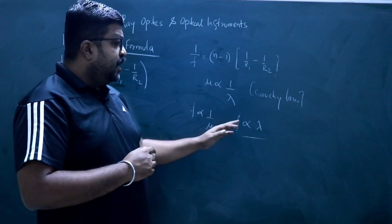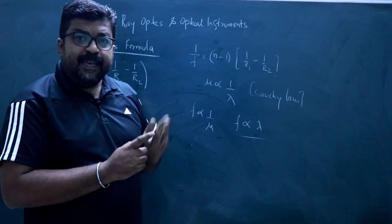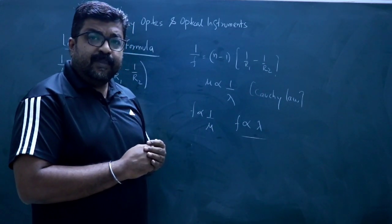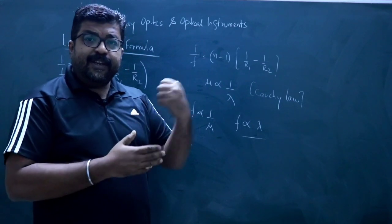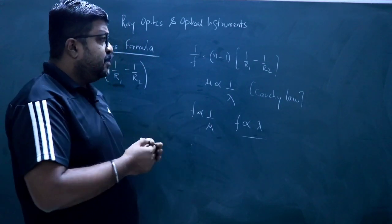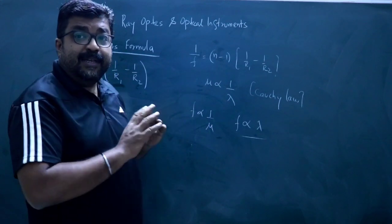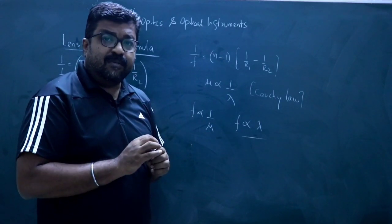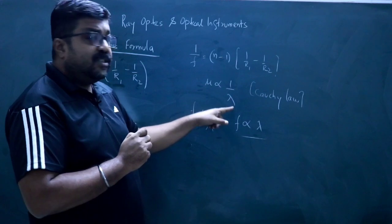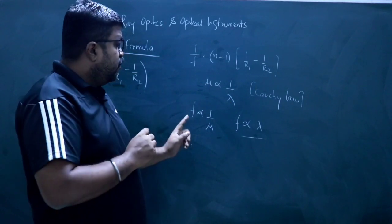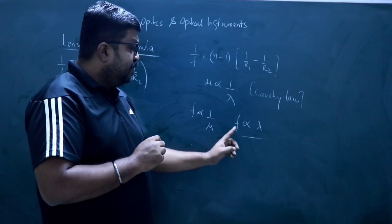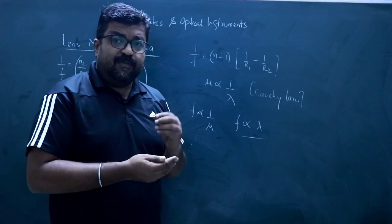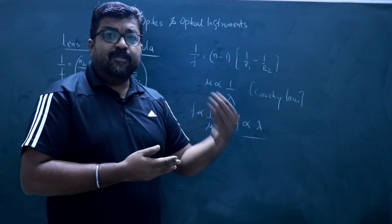So if the focal length is directly proportional to wavelength, this means that if the wavelength of light increases, the focal length also increases. You have to explain this as well — you don't have to write a direct answer without a reason, even if it is a one-mark question. Write: refractive index is inversely proportional to wavelength; focal length is inversely proportional to refractive index; therefore focal length is directly proportional to wavelength. So if wavelength of light is increased, the focal length is also increased.